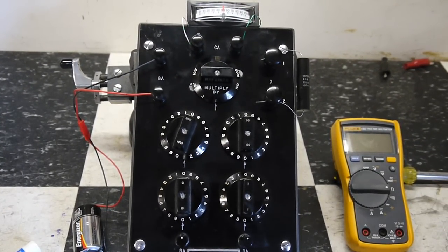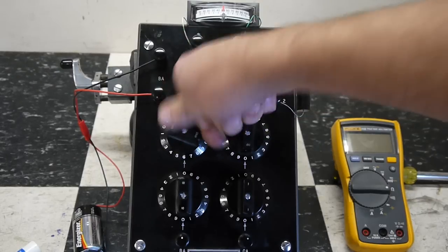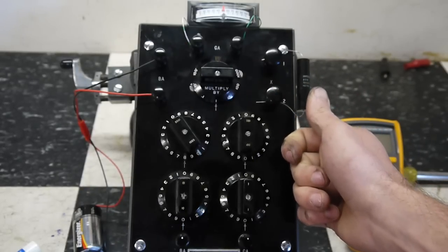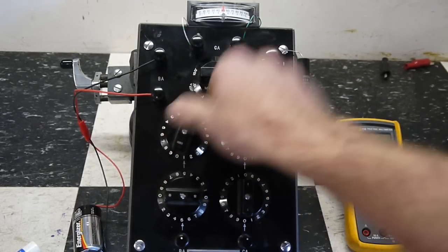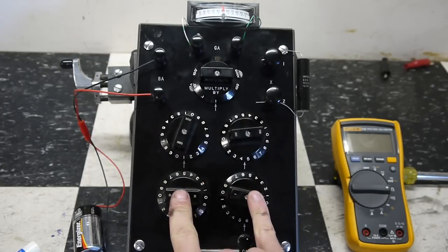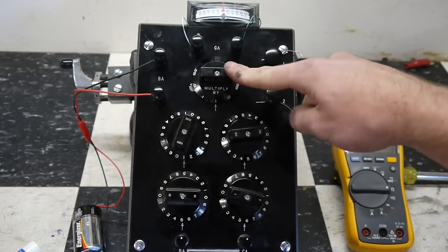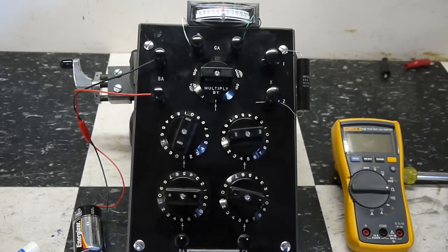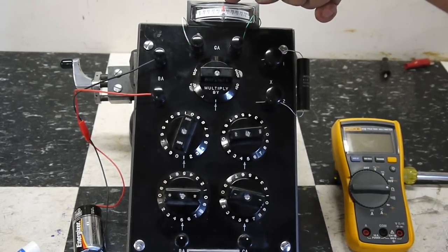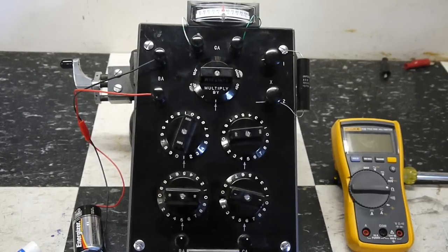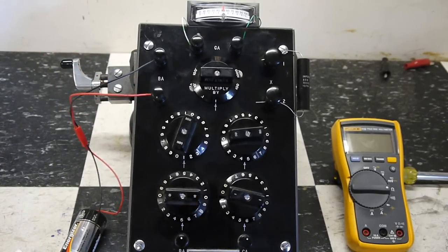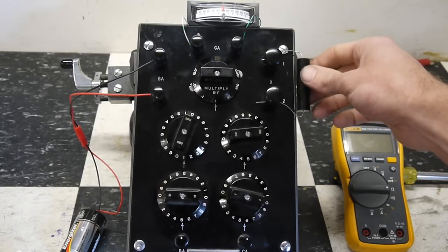And has kind of unusual dials because there's 20 positions. So, there's four significant digit dials and then your exponent dial, your multiply by dial. Up here we have a tangent galvanometer. Every division there is one microamp. And over here we have our battery. And here we have our unknown resistance.